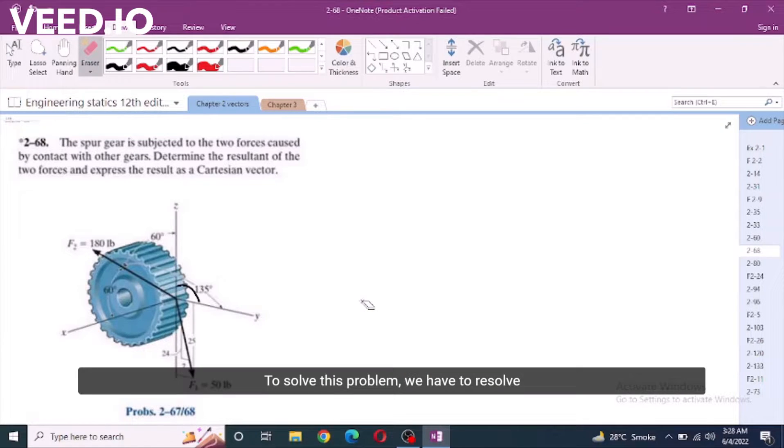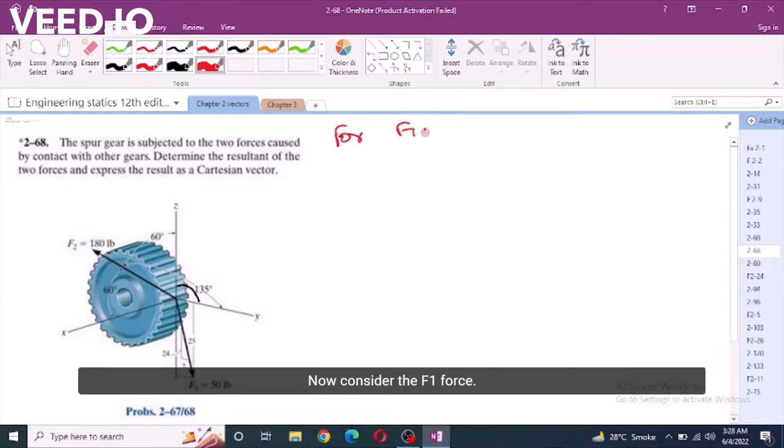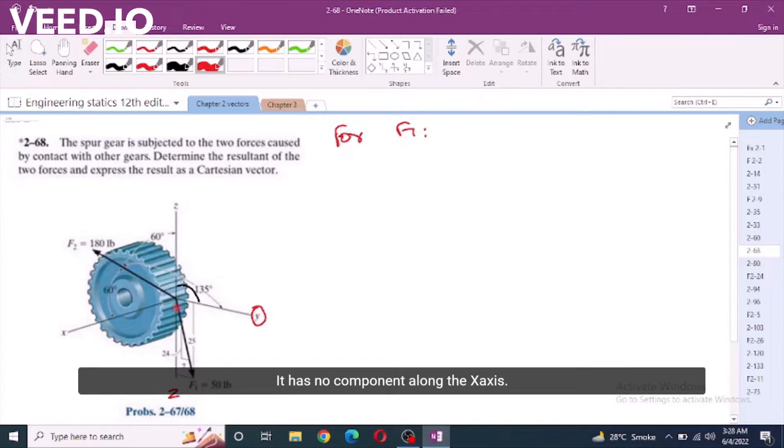To solve this problem, first of all, we have to resolve these two forces into vector form. For f1 force, now consider f1 force. This only lies along the plane containing y and z-axis. It has no component along the x-axis. What we have in f1 force, we have 0i.